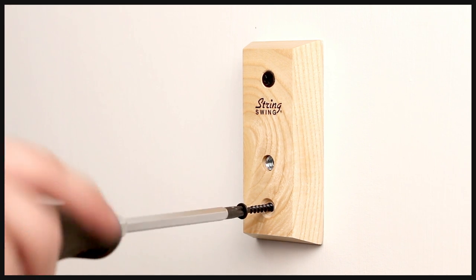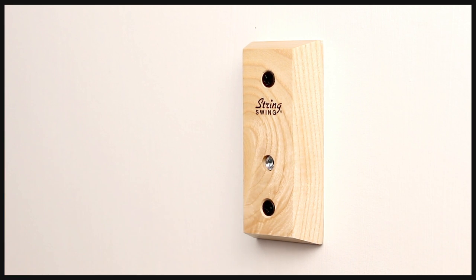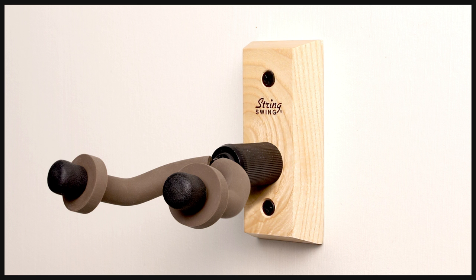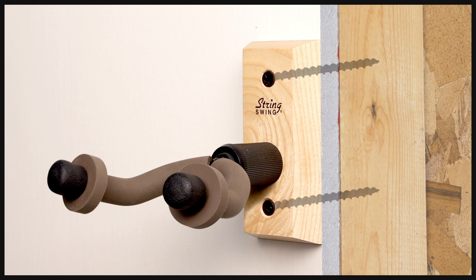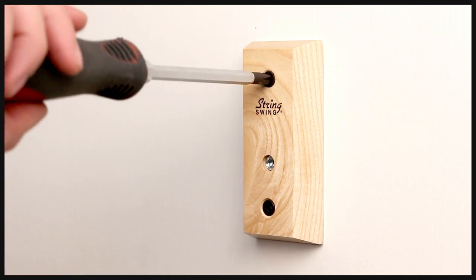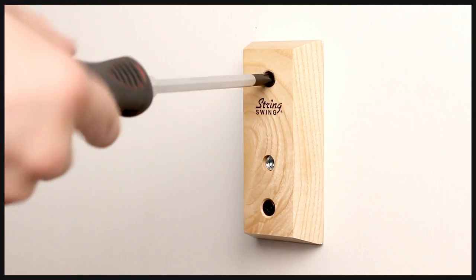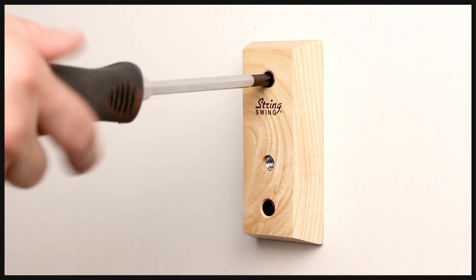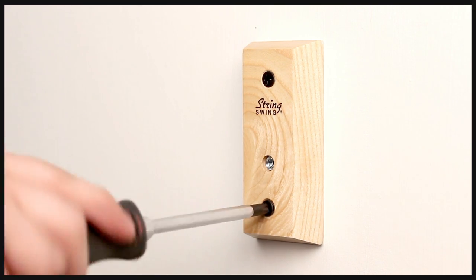Now if you hit a stud either accidentally or intentionally when you're driving in the screws, then you won't need the drywall toggles. If you're unable to tighten the screws any further, most likely that's the case. But if while you're tightening the screw loosens and begins to rotate freely, then you will need to use the drywall toggles to make the mount strong enough to support the weight of your instrument.